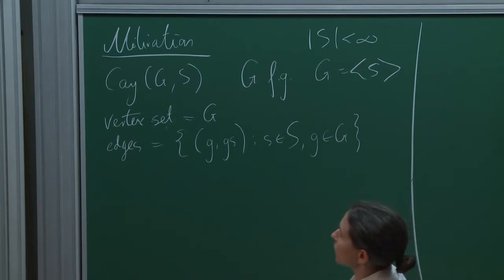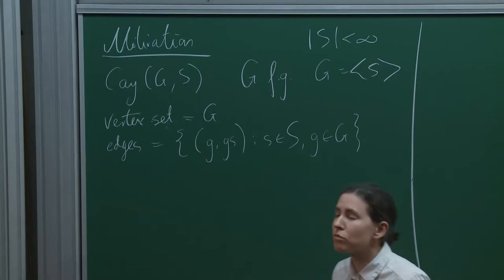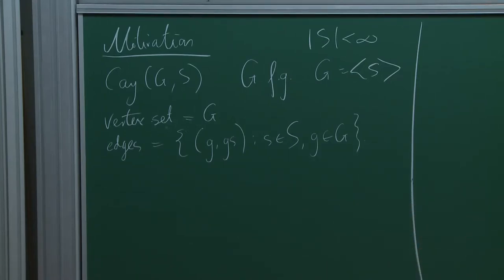So this is a graph, hence a metric space, just using the shortest path metric. The group acts by isometries on this graph by left multiplication, so we can use the group action as well. There are many connections between geometric properties of this graph and algebraic or structural properties of the group.